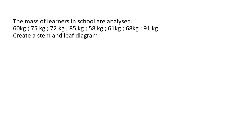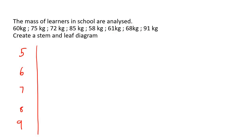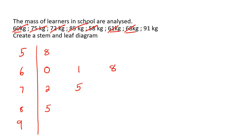Now we're going to create a stem and leaf. Put the vertical line going down. Remember: ignore the last digit of each number, then take the remaining digits to create the stems — five, six, seven, eight, and nine. For the fives there's only an eight. For the sixes there's a zero, one, and eight. For the sevens there's a two and a five. For the eights there's a five. And for the nines there's a one. That is what your stem and leaf would look like.